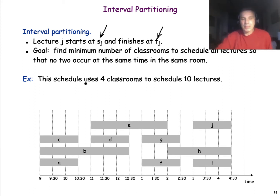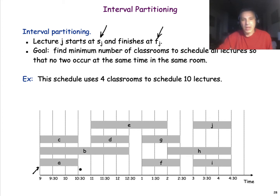To make the example more clear, suppose the resources refer to classrooms and the jobs refer to lectures. For instance, Lecture A starts at 9 o'clock and finishes at 10:30. Lecture B starts at 9 and finishes at 12:30, and so on. You can see all the different lectures that we have.